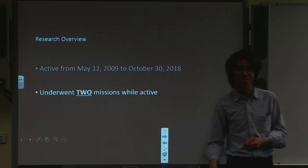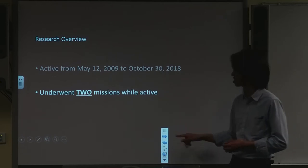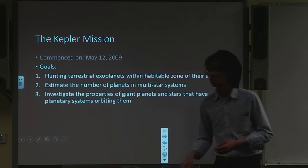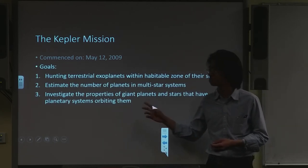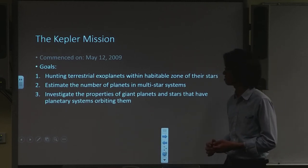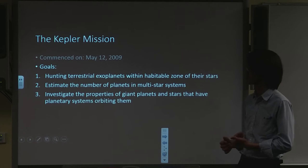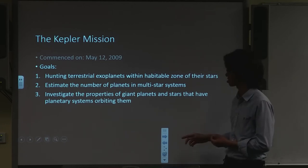So Kepler underwent two missions from 2009 to 2018. The first mission hunted habitable terrestrial planets. It also measured the number of planets in multi-star systems, as well as to investigate the properties of giant planets and stars that have planetary systems orbiting them.